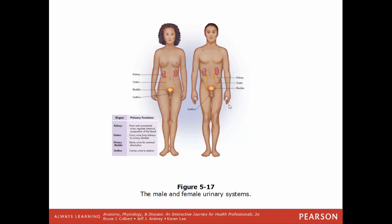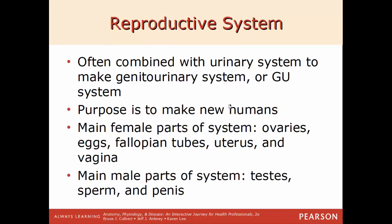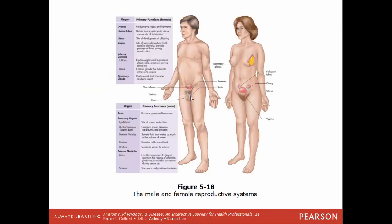The reproductive system is often combined with the urinary system to make the genitourinary (GU) system. Its main function is to produce more people — make new humans. For females, main parts include the ovaries, eggs, fallopian tubes, uterus, and vagina. For males, the main parts are the penis, testes (where sperm cells are made), and sperm. The structures are the uterus, fallopian tubes, and ovaries for females, and the testes, penis, and vagina for the female side.